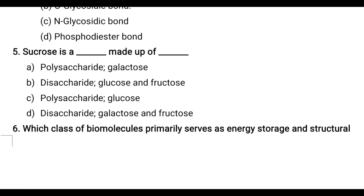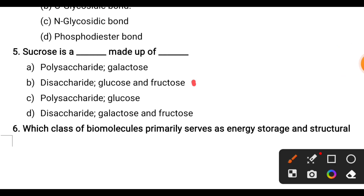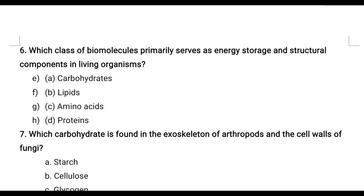Fifth question: Sucrose is a dash made up of dash. Options include: polysaccharide galactose, disaccharide made up of glucose and fructose, polysaccharide glucose, disaccharide made up of galactose and fructose. The correct answer is sucrose is a disaccharide made up of glucose and fructose.